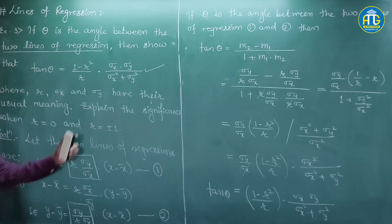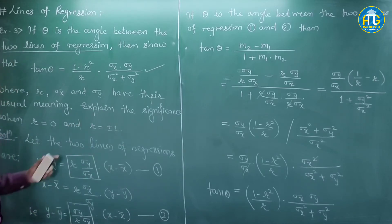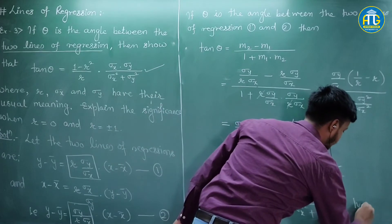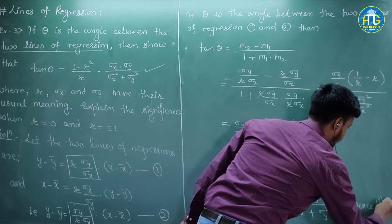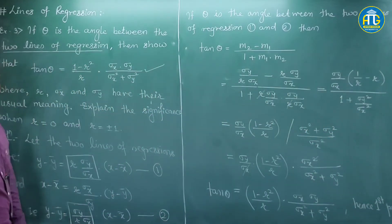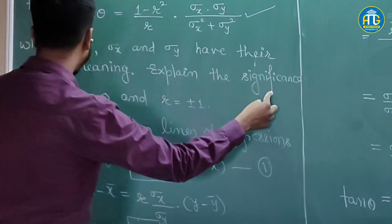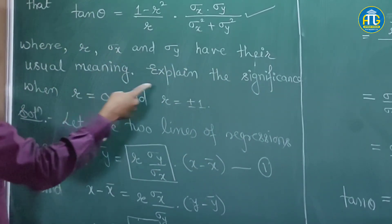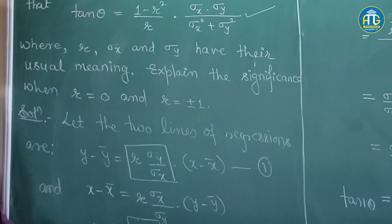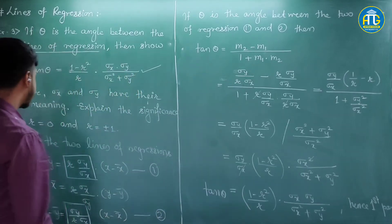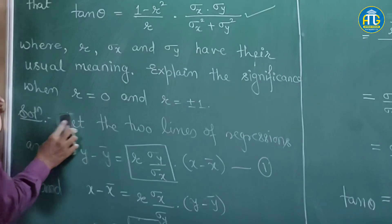Now we have the second part. The first part is done. The second part asks us to explain the significance when r = 0 and when r = ±1. We will make use of the proven formula to see the significance.